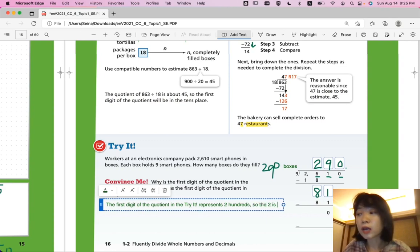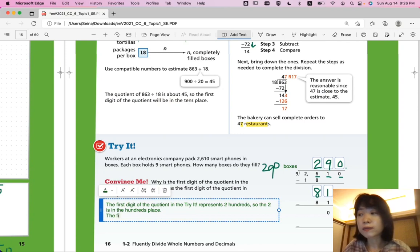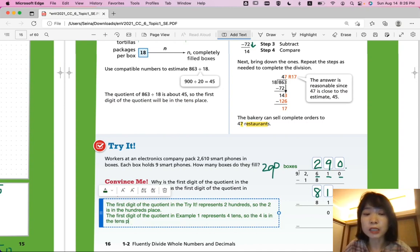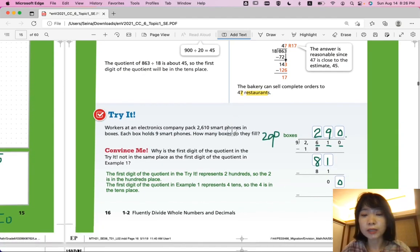So, the 2 is in the hundredths place. But then, the first digit of the quotient in example 1 represents 4 tenths. So, the 4 is in the tenths place. That was example 1. Let's look at the next page.